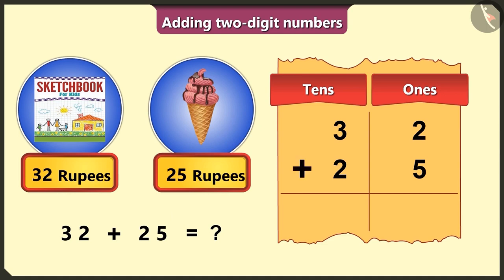Hey, but I still have to do the addition. Now, in the ones box, two and five will add up to form seven. In the tens box, three and two will add up to form five.